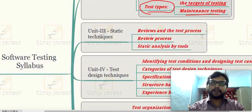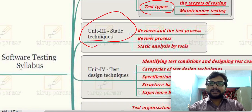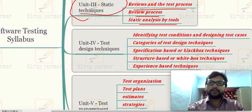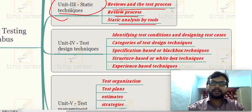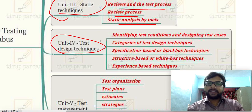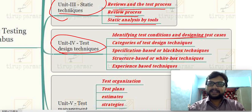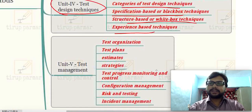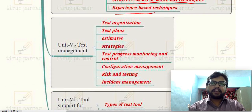In Unit 3 we will be talking about static techniques for testing — for example, review and test process, review process, and static analysis by tools. In Unit 4 we will be discussing test design techniques: identifying test conditions, designing test cases, and we will categorize test design techniques — specification-based or black box technique, white box testing, and experience-based testing.